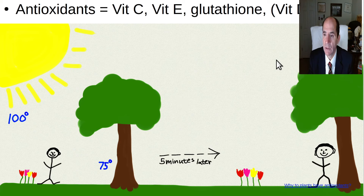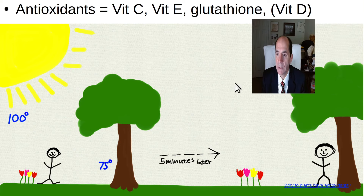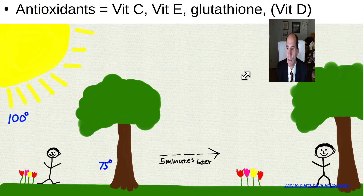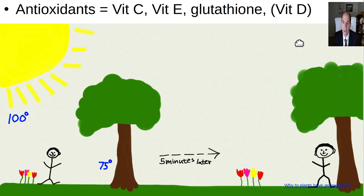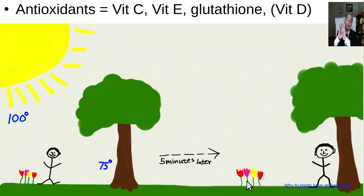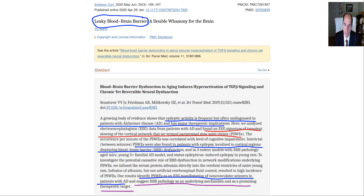Antioxidants are your friend, and you get them from plants. Think of it this way: a person in the hot sun can walk under a tree for shade, but a plant can't — so the plant fights back against oxidative damage by producing antioxidant chemicals. When you eat the plant, you get those chemicals; you don't get them from eating an animal because the animal has already used them up.